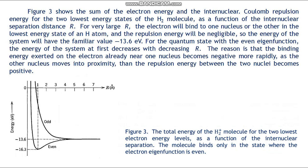Figure 3 shows the sum of the electron energy and the internuclear Coulomb repulsion energy for the two lowest energy states of the H₂⁺ molecule as a function of internuclear separation r. For very large r, the electron will be near one nucleus or the other in the lowest energy state of the hydrogen atom and the repulsion energy will be negligible, so the energy of the system will have the familiar value of −13.6 electron volts. For the quantum states with the even eigenfunction, the energy of the system at first decreases with decreasing r.